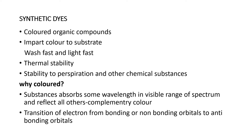Phthalocyanine dyes. Next, we will discuss in a moment. Phthalocyanine dyes — a synthetic dye, a colored organic compound that imparts color to a substrate. It is thermally stable and has stability to precipitation and other chemical substances. A colored substance absorbs some wavelengths in the visible range of the spectrum and reflects all others.